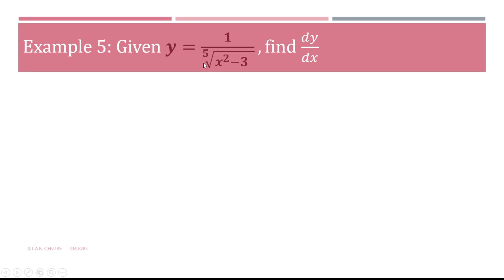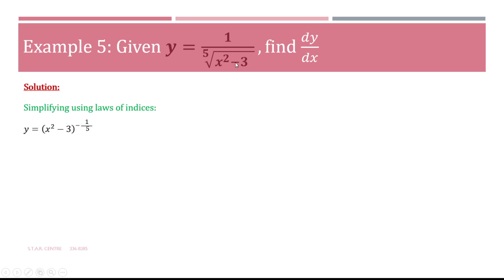Example 5: given y equals 1 over the 5th root of (x² minus 3), find dy/dx. When differentiating something in this form with a root sign, we use the laws of indices to express it in a simpler form before differentiating. The 5th root and 1 over can be expressed as y equals (x² minus 3) to the power of minus 1/5. Now we make our substitution: let u equal x² minus 3, so y equals u to the power of minus 1/5.